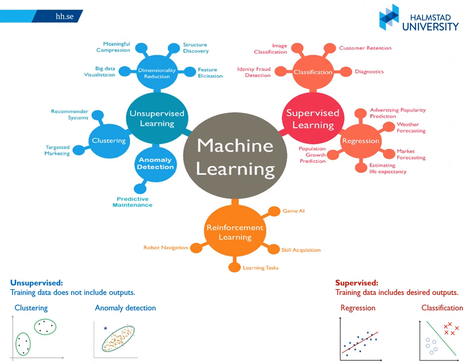We mentioned earlier different kinds of machine learning, so let's review that quickly. We have supervised learning, unsupervised learning, and reinforcement learning. Between supervised and unsupervised learning, we have semi-supervised learning and also active or interactive learning. Within unsupervised learning we have clustering, anomaly detection, and dimensionality reduction. Within supervised learning we have regression problems and classification problems.